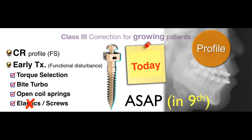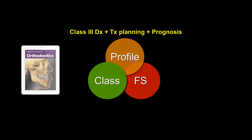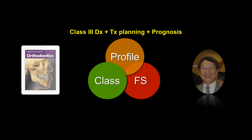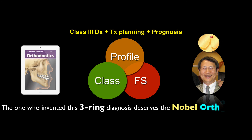We're talking about my mindset in treatment. This 3-3 circle really helped me a lot. I truly believe — 100% — that the one who invented this 3-3 circle deserves the Nobel Prize. So I give him a gold ring. The one who invented this 3-3 circle, 27 years ago, is right here in this room.